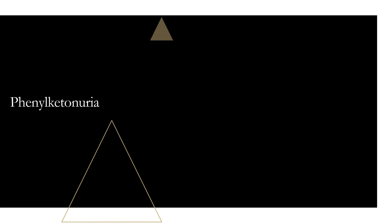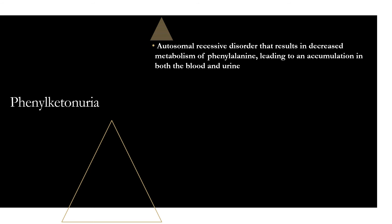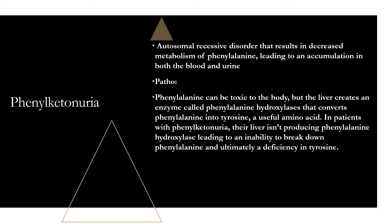Moving on to phenylketonuria. This is an autosomal recessive disorder that results in decreased metabolism of phenylalanine, leading to an accumulation of phenylalanine in both the blood and the urine. Phenylalanine can be toxic to the body in high amounts.